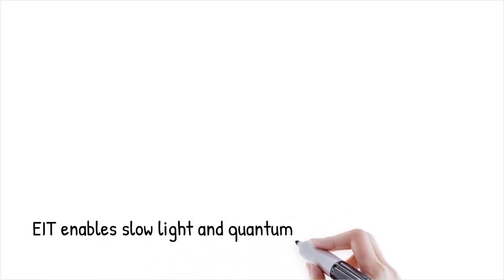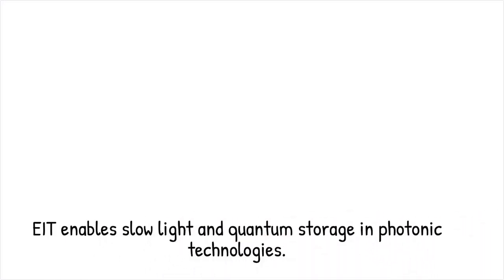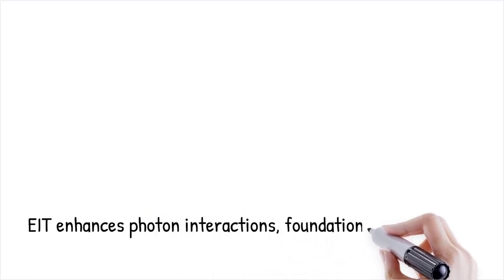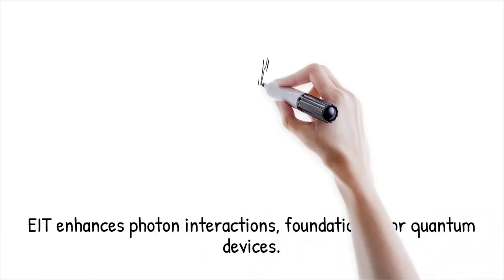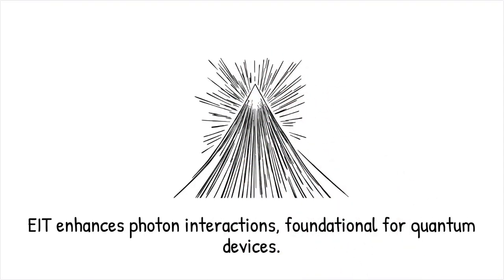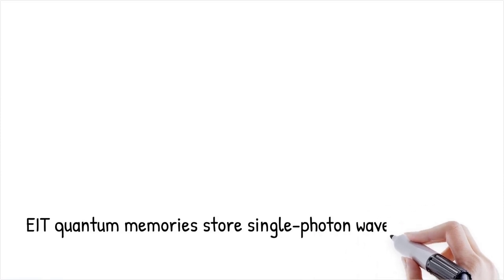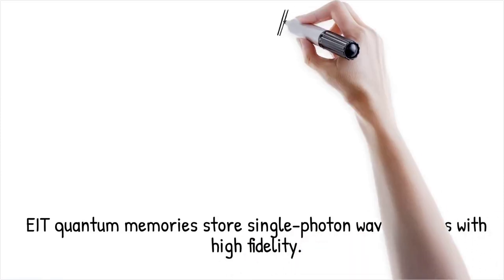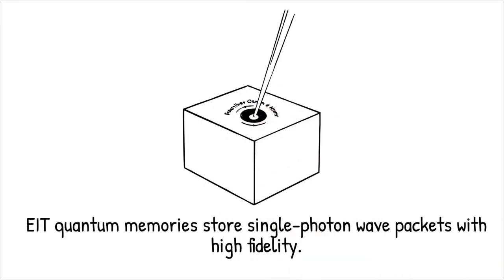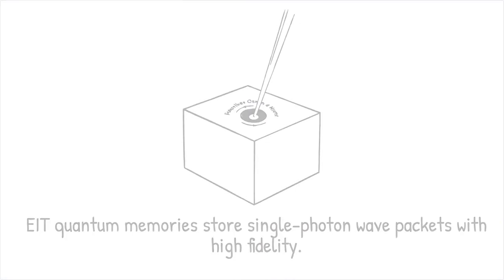EIT has transformative implications for photonic technologies by enabling slow-light optical storage and enhanced non-linear interactions. By compressing light pulses and storing them in atomic coherences, one can create quantum memories for photons. The enhanced non-linearity in the transparency window facilitates efficient photon-photon interactions at the single photon level. Consequently, EIT is foundational for developing quantum repeaters, sensors, and on-chip photonic circuits. EIT-based quantum memories have stored and retrieved single photon wave packets with high fidelity in cold atomic ensembles — like putting a fleeting message into a draft folder and retrieving it intact later without loss.